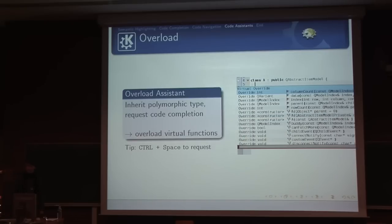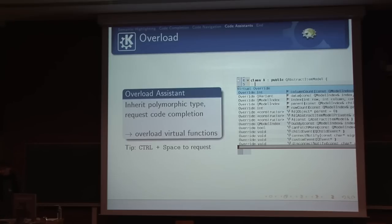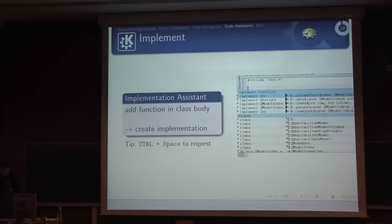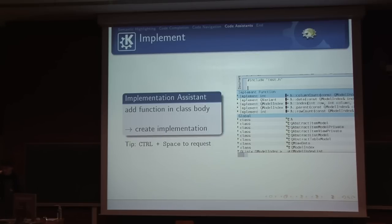There is the overload assistant, similar to code completion. You write your class, inherit from a virtual class, and do Ctrl+Space in the body. It tells you which pure virtual functions you must override (marked with a red flag) and which other virtual functions you can optionally override. Then you switch to the .cpp file, do the same Ctrl+Space, and assuming you've added those functions to the header, you can execute the item and it writes the function body for you — so you can just write the real code you're interested in.